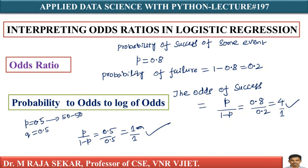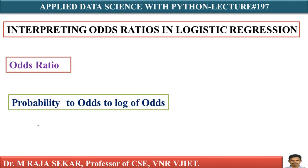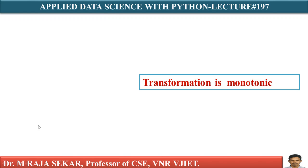So in the first case, if your probability of success is 0.8, then odds of success is 4 to 1. If probability of success P equals 0.5, then odds of success is 1 to 1. It is simple and straightforward.